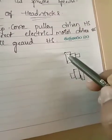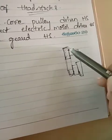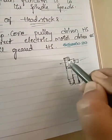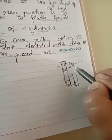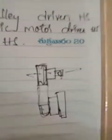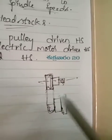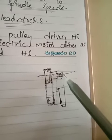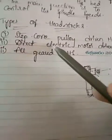In the step cone pulley driven headstock, the size of the pulley varies. A key belt is used — similar to rice mills. The diameter of the pulley affects speed: if the diameter is lower, the speed is increased, and vice versa. This is the working principle of the step cone pulley driven headstock.